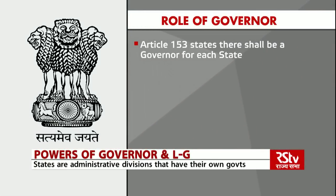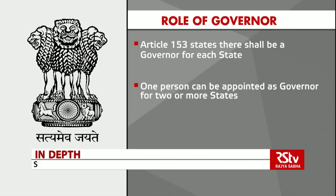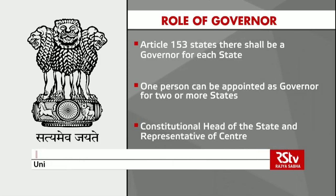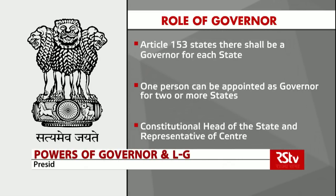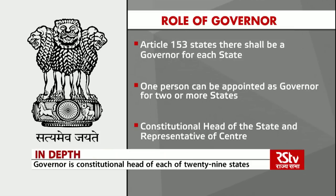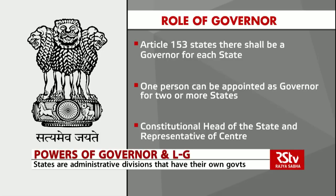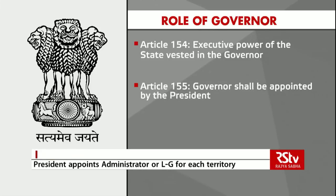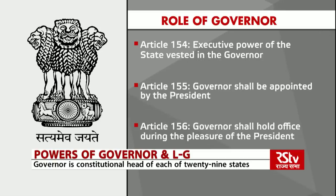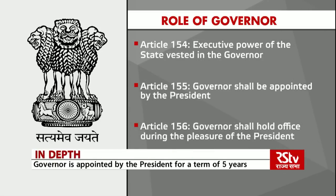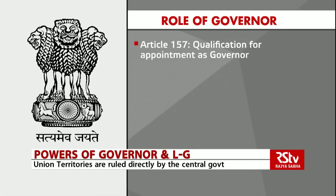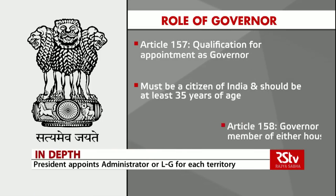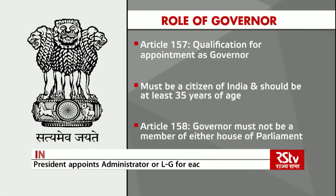Article 153 of the Constitution says that there shall be a governor for each state, and one person can be appointed as governor for two or more states. The governor actually acts as a representative of the central government and ensures that the state is running smoothly as per the Constitution, playing a double role: one as the constitutional head of the state and second as the representative of the central government. Article 154 vests the executive power of the state in the governor. Article 155 says the governor shall be appointed by the president. Article 156 provides that the governor shall hold office during the pleasure of the president, with a term prescribed as five years. Article 157 deals with qualifications for appointment — the person must be a citizen of India and at least 35 years of age.